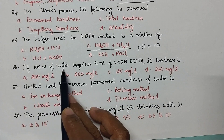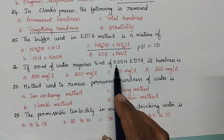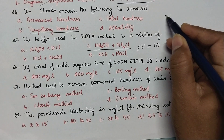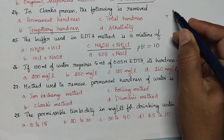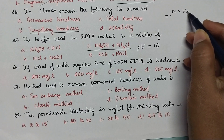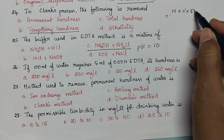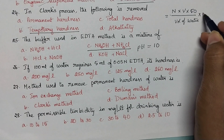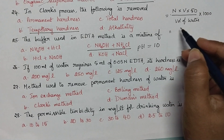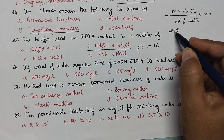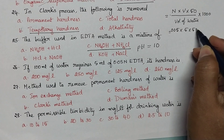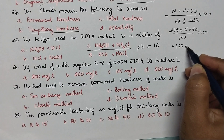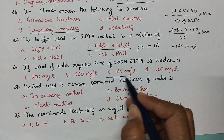If 100 ml of water requires 5 ml of 0.05 normal EDTA, its hardness is calculated as: Total hardness = (normality of EDTA × volume of EDTA × equivalent weight of CaCO₃) / (volume of water) × 1000 = (0.05 × 5 × 50) / 100 × 1000 = 125 mg per litre.